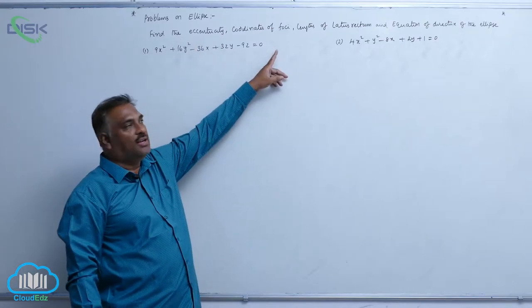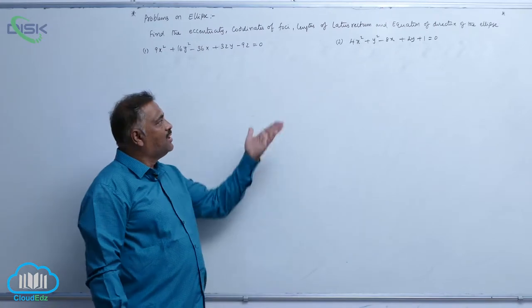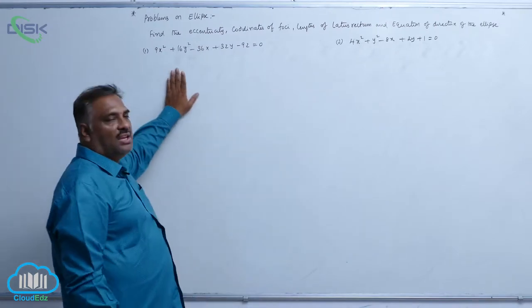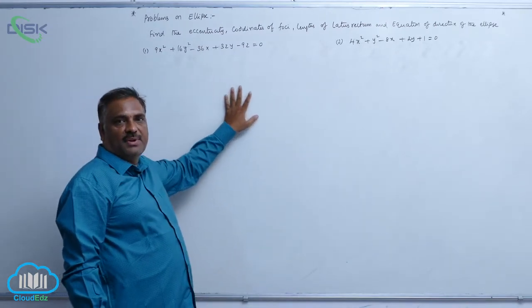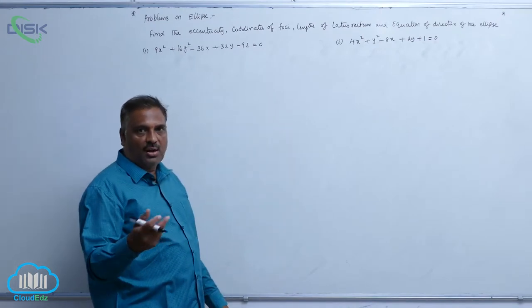Eccentricity, foci, length of lattice rectum, equation of directrix of the ellipse. Now let us see. Suppose if they are not in standard form, that means origin is shifted from 0,0 to some desired point. How to do? Let us see.